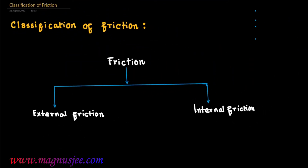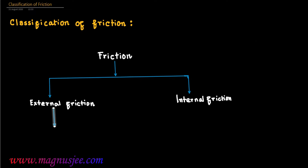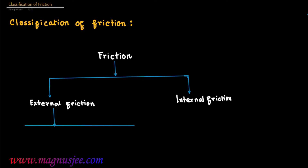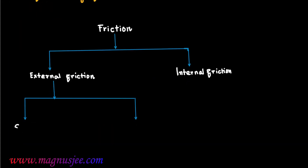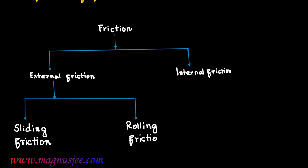There are two types of external friction. External friction acts between the surfaces in contact of two solid bodies. Number one is sliding friction and number two is rolling friction.